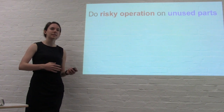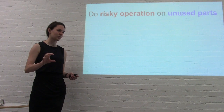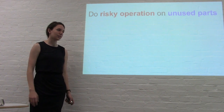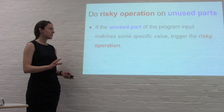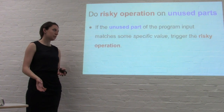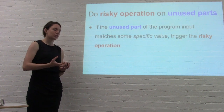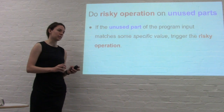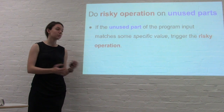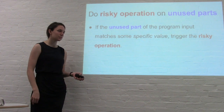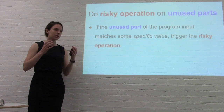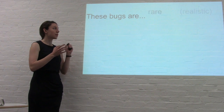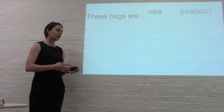Now you have these two things: the risky operation and the unused part of the input. You do that risky operation in that unused part. In the essay, this might be putting the Abraham Lincoln dinosaur thing in some middle paragraph that your teacher might skip over. In a program, this is finding that unused part of the program input and then, when it matches some specific value, triggering that risky operation — like dividing by zero or reading a file you don't have permission to read. With this system, you can make bugs that are rare and subtle.